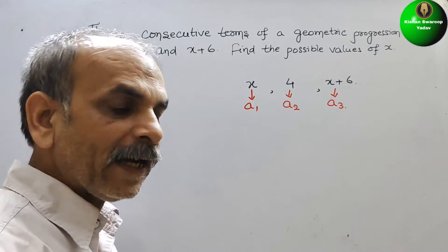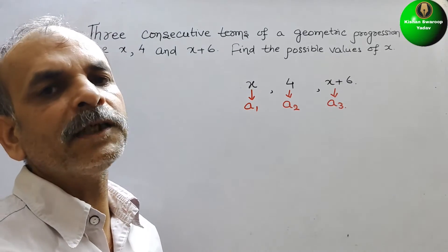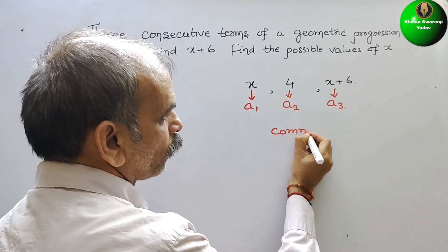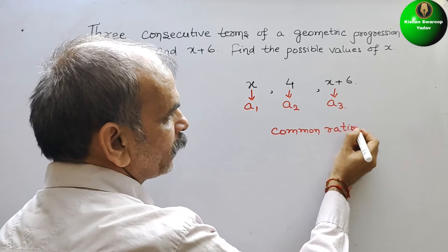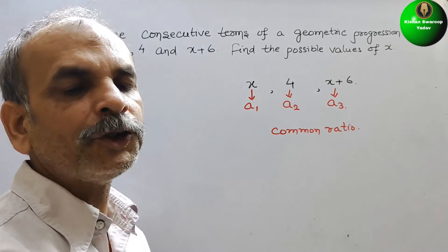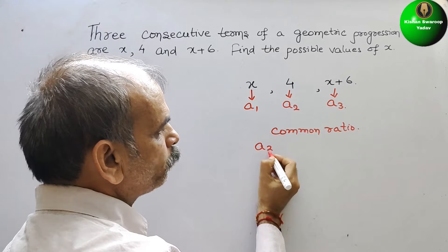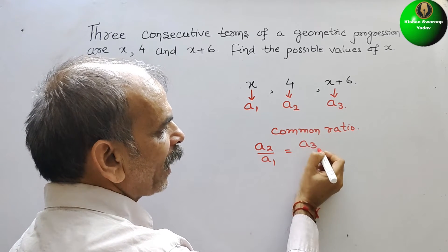We know that in GP, what is the common? Common is nothing but common ratio. That means we have to find the ratio. So first it will be what ratio? a2 by a1 equals a3 by a2.